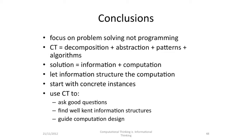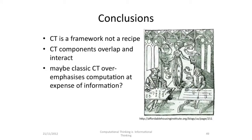In conclusion, we need to focus on problem solving, not programming. We need to think about computational thinking — computational thinking certainly is decomposition, abstraction, patterns and algorithms. But think about solutions as information plus computation. Let the information structure the computation. Start with a concrete instance and then use computational thinking to ask good questions, find well-known information structures, and then guide the computation design. Computational thinking as a framework isn't a recipe — the components overlap and they interact. You can't just filter them out independently; you've got to think about all of them in a creative way. And classic computational thinking overemphasizes computation at the expense of information.